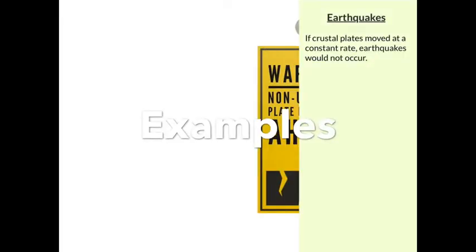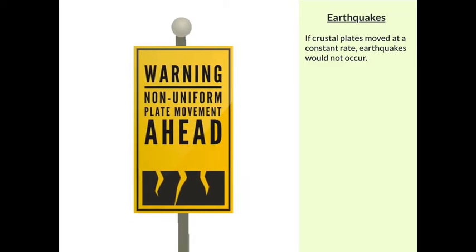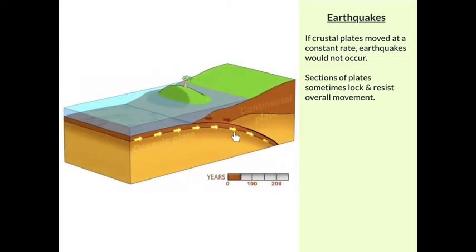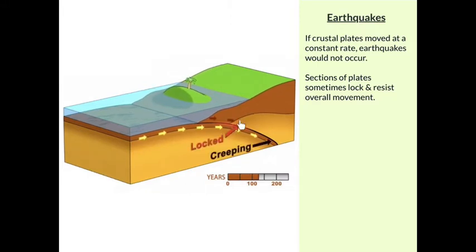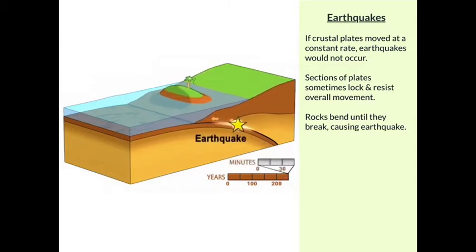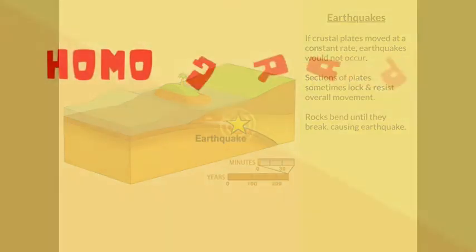If crustal plates moved at a constant rate, earthquakes would not occur. But plate movement is not uniform. Sections of the moving plates sometimes lock and resist the overall movement. As the plates continue to move, the rocks bend until they break. As the rock breaks, it snaps into a new position, causing the shaking of an earthquake.